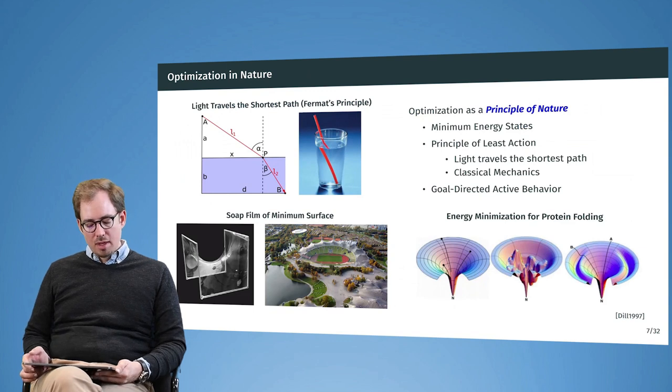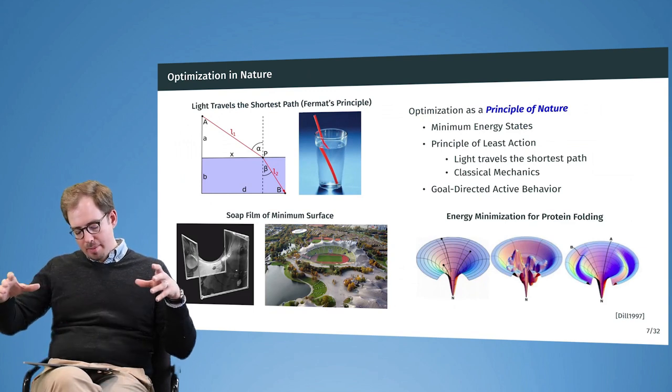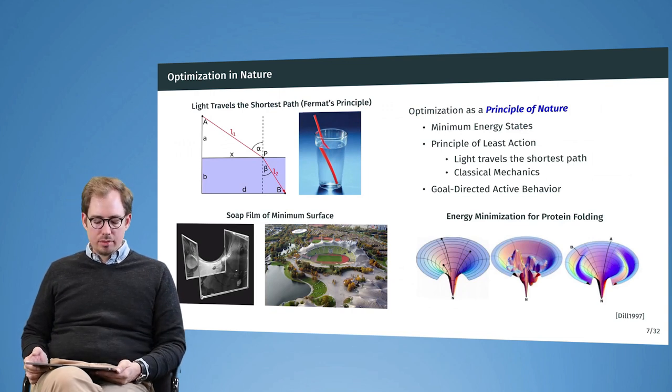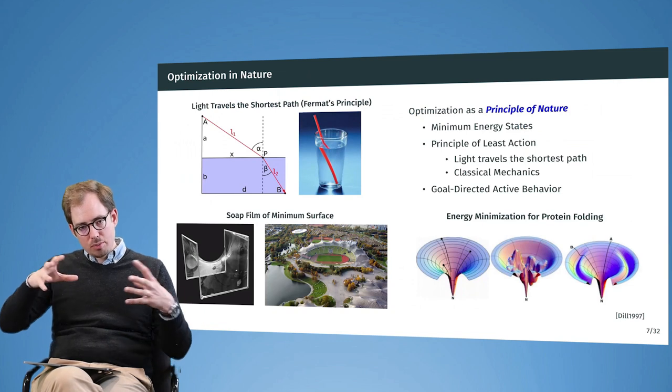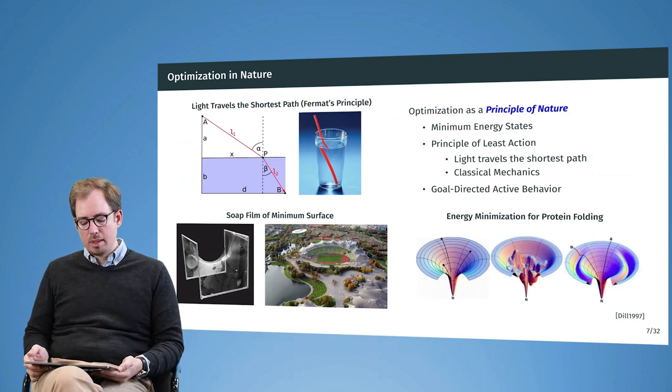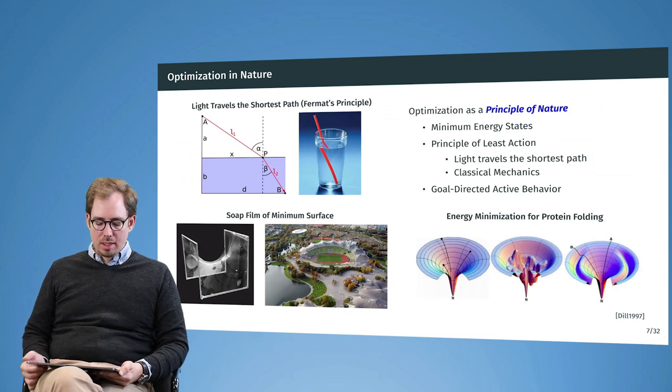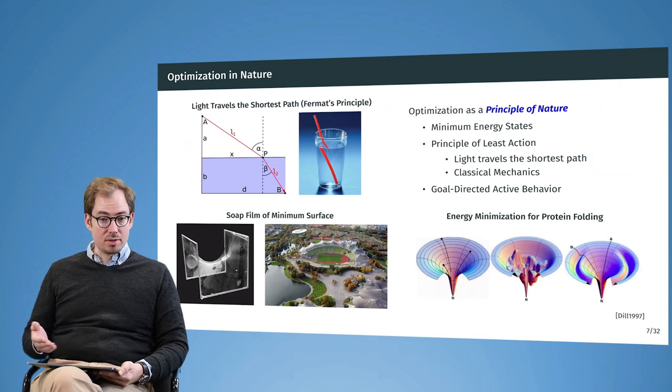Depending on the speed that light can travel in a certain material, it will take a slightly different path. This is called Fermat's Principle, and you see this quite nicely on the image with the straw and the glass. Another example are soap films. If you create a soap bubble or a soap film, it will return to a shape of minimum surface because there is a surface tension and it wants to reduce to the minimum surface.